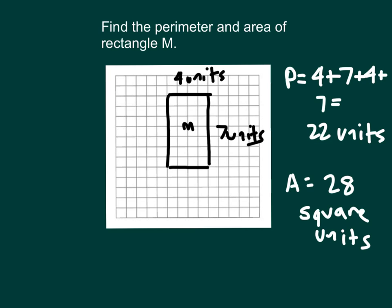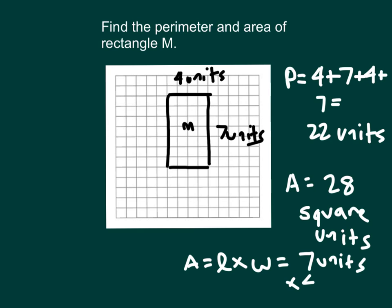Was there an easier way to figure that out? Maybe you wanted to count 4 at a time — count by 4's: 4, 8, 12, 16, 20, 24, 28. Even easier than that would be to use the formula. Area is equal to length times width. The length was 7 units and the width was 4 units. So 7 times 4 is 28 — and that's why, when multiplying units by units, we get square units. Be very careful about the labels that you use.